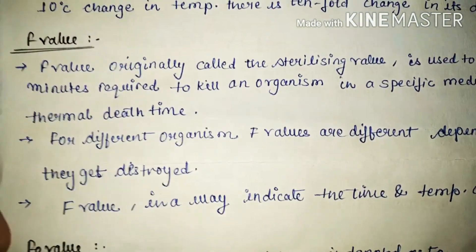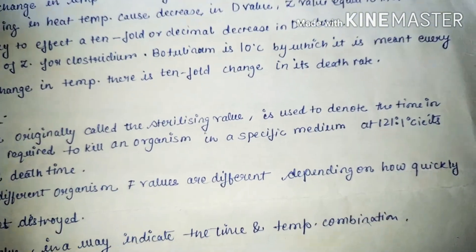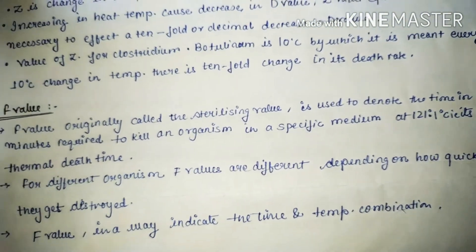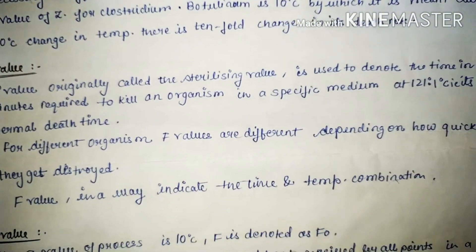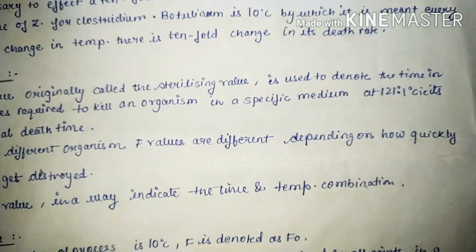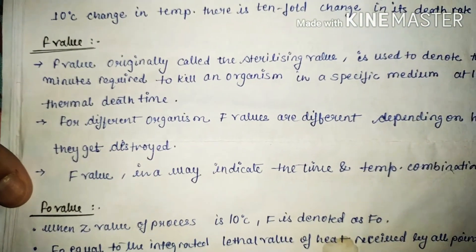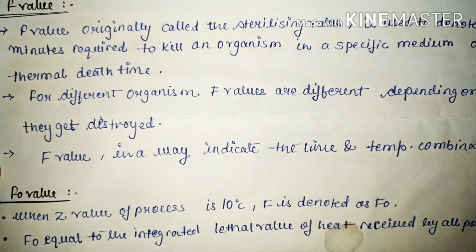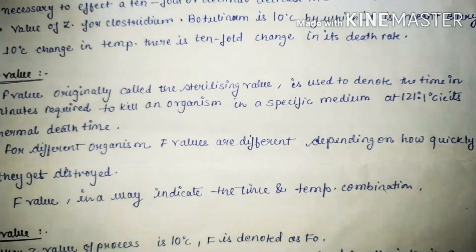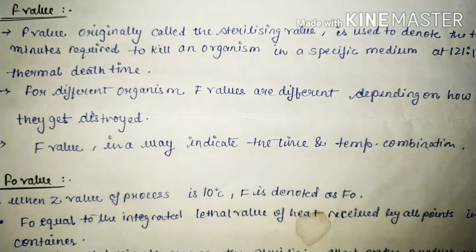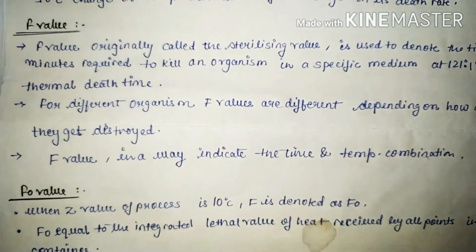What is F value? F value, originally called a sterilizing value, is used to denote the time in minutes required to kill an organism in a specific medium at 121.1 degrees Celsius. It is the thermal death time. F values are different for different organisms depending on how quickly they get destroyed. F value in a way indicates the time and temperature combination.